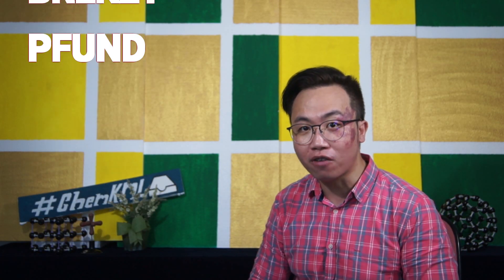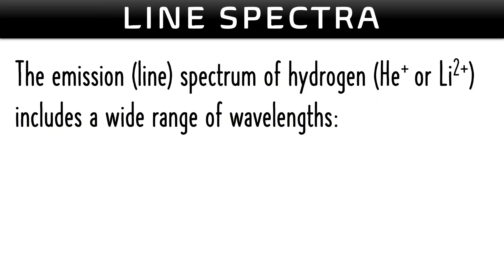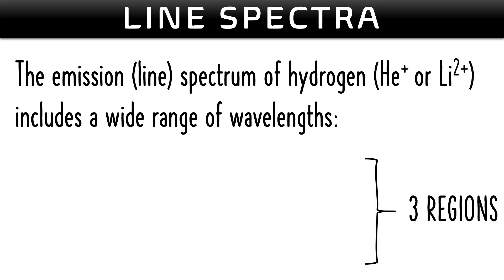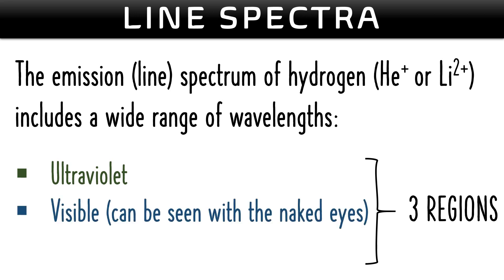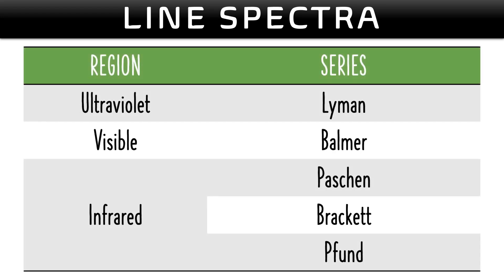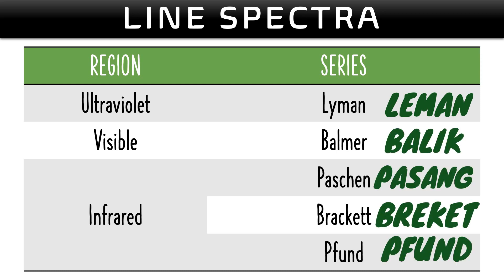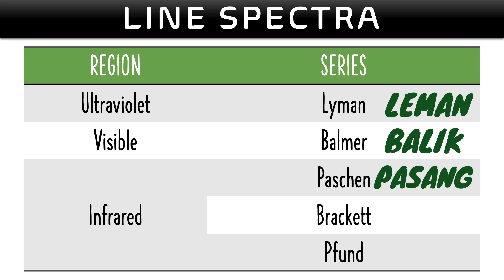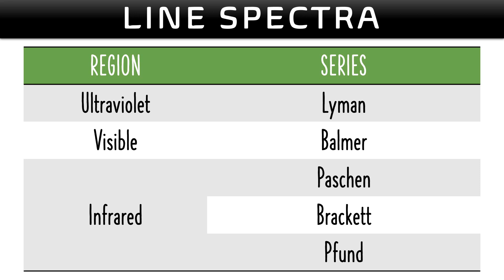Now let's look at how line spectra are produced and what the mnemonic 'lemon balik pasar bracket fun' has to do with this. The emission spectrum of hydrogen includes a wide range of wavelengths falling into three regions: ultraviolet, visible, and infrared. Within these regions there are series — in the ultraviolet region you have the Lyman series, in the visible region the Balmer series, and in the infrared region we have Paschen, Brackett, and Fund series — hence the mnemonic: lemon balik pasar bracket fun.